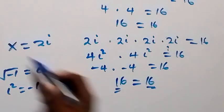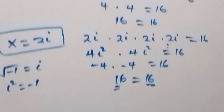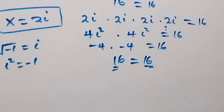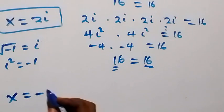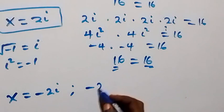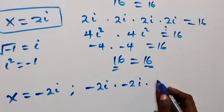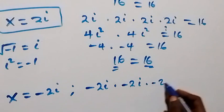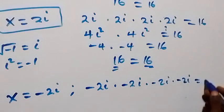Also for x equals minus 2i, we have minus 2i times minus 2i times minus 2i times minus 2i equals 16.